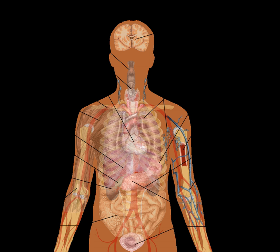Reproductive system: the sex organs, such as ovaries, fallopian tubes, uterus, vulva, vagina, testes, vas deferens, seminal vesicles, prostate and penis.